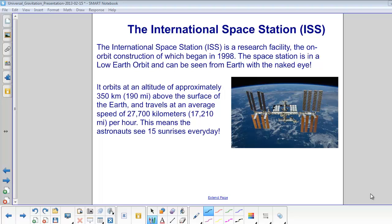It's only about 350 kilometers above the surface of the Earth. That's 190 miles. And it travels an average speed of 27,700 kilometers per hour, which is over 17,000 miles per hour. This means that astronauts on the space station see 15 sunrises every day.